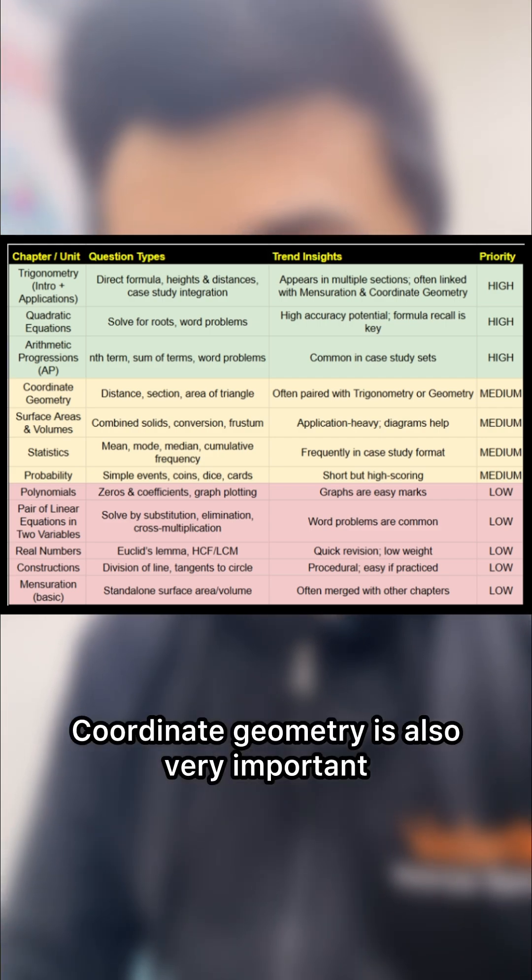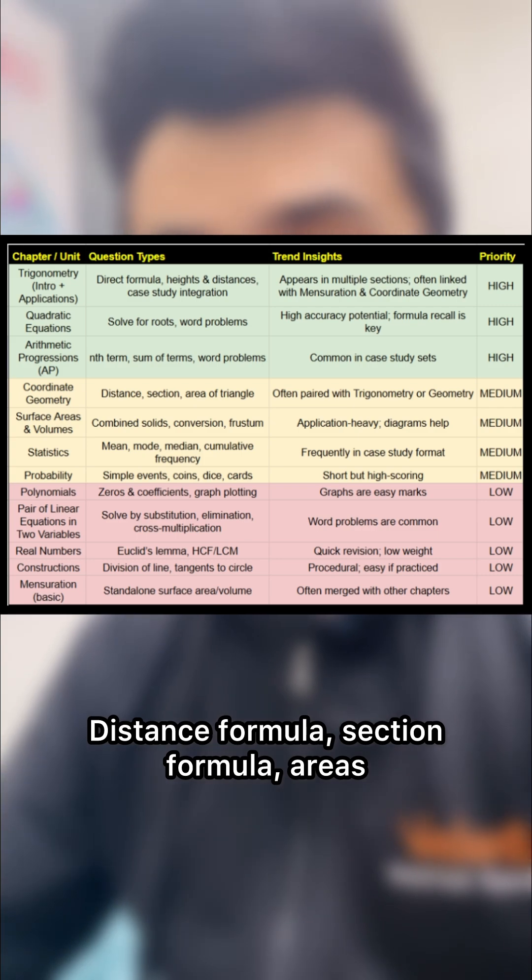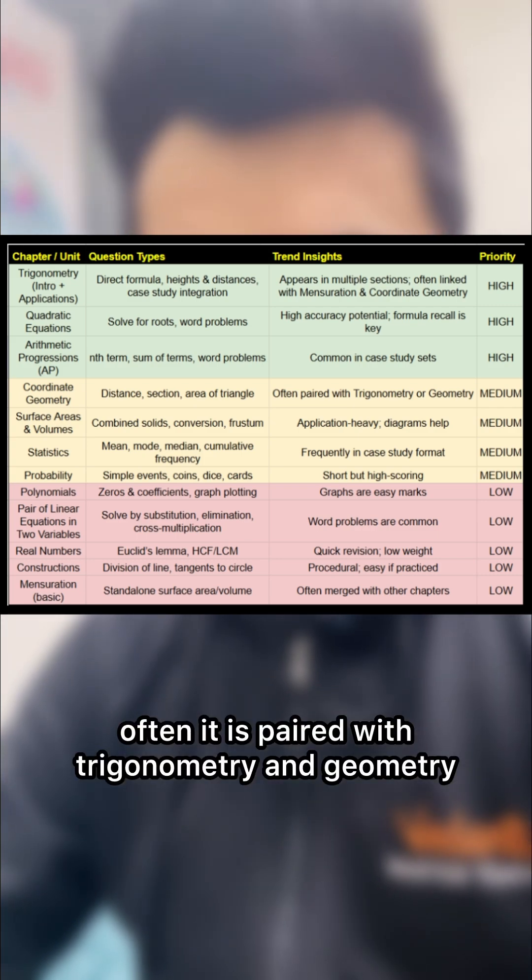Coordinate geometry also very important. Distance formula, section formula, areas. Often it is paired with trigonometry and geometry.